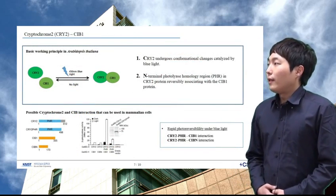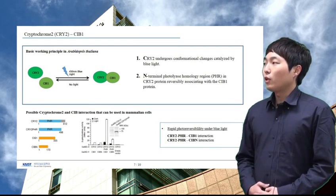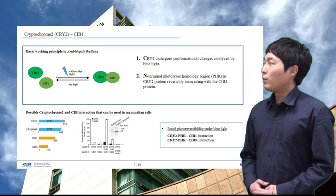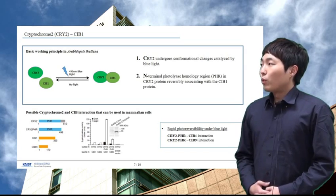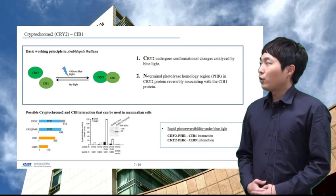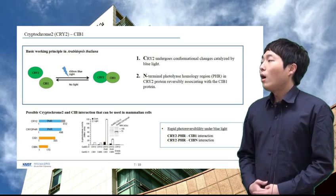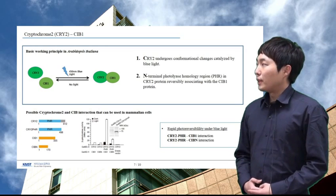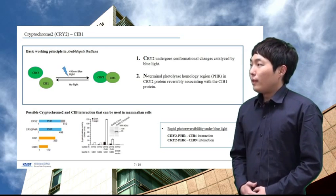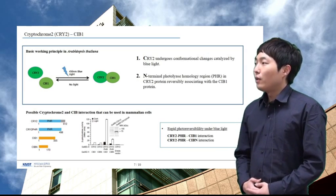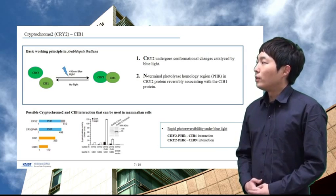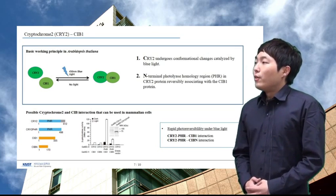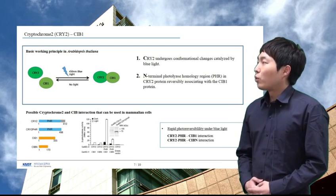The second paper I will introduce reported a genetically encoded light-inducible protein interaction model based on Arabidopsis thaliana Cryptochrome-2 and CIB-1. Plant cryptochromes contain a conserved N-terminal photolyase homology region that binds flavin and pterin chromophores and mediates light-responsive signaling. This photodimerization requires no exogenous ligands and dimerizes on blue light exposure with sub-second time resolution and sub-cellular spatial resolution.